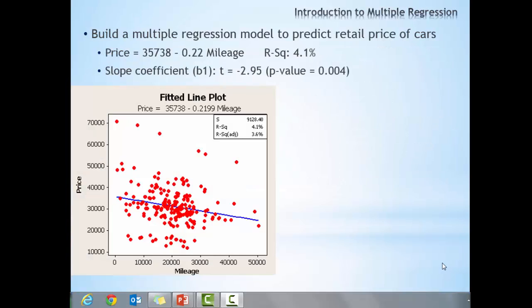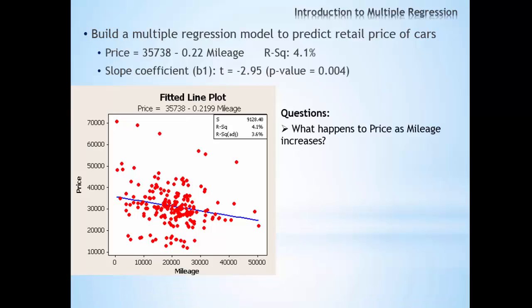So here we're going to start with a simple linear regression model. We are using mileage of the car to predict price. We do see a trend that when mileage increases, price does decrease. However, notice that the slope coefficient, B1, equals negative 0.22. This seems rather small.